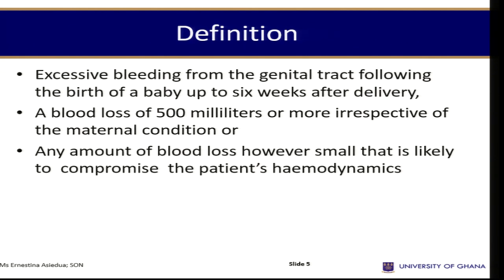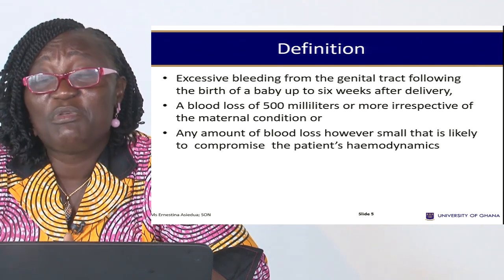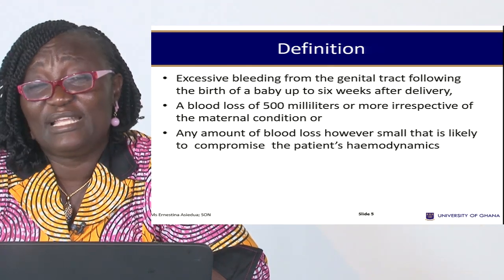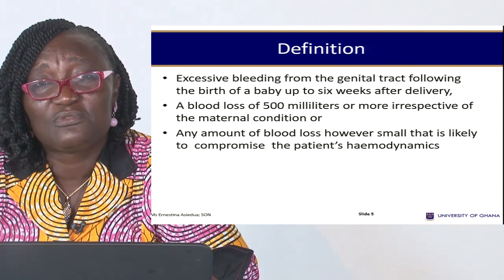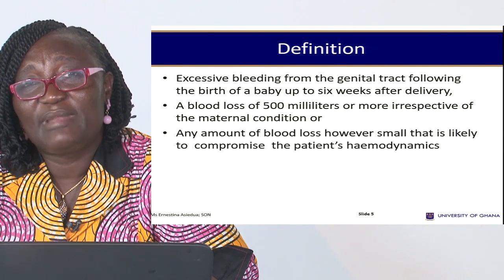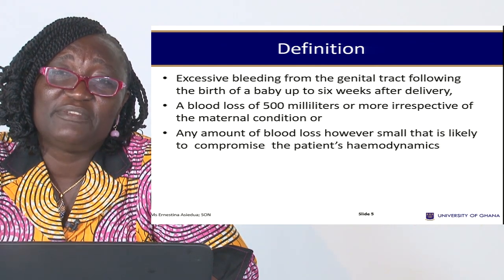Postpartum hemorrhage has been defined as excessive bleeding from the genital tracts following the birth of a baby, up to six weeks after delivery. Since the puerperium extends from delivery to six weeks, postpartum hemorrhage refers to any bleeding from the genital tract during the first six weeks. It is defined as a blood loss of 500 milliliters or more, irrespective of the maternal condition, or any amount of blood loss that is likely to compromise the patient's hemodynamics.